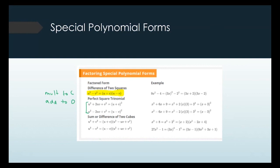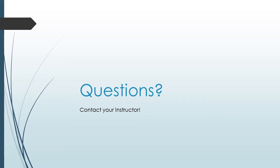I recommend recognizing the difference of two squares because it's a lot faster once you see the pattern. The other two special forms — sum or difference of two cubes — there's no trick; the only way to factor those is by remembering the formula, where you can take the cube root cleanly. So I would focus on learning difference of two squares and sum or difference of two cubes, or at least have them written down. Factoring is worth spending a lot of time on because you'll be doing it constantly.